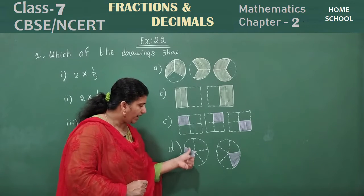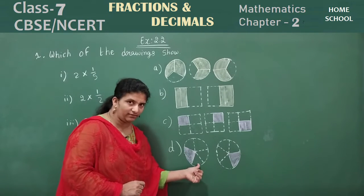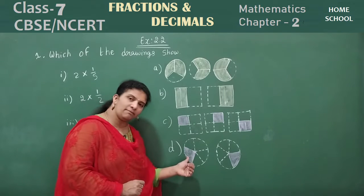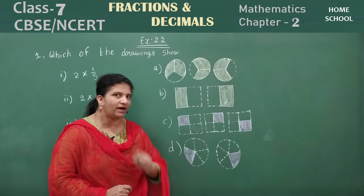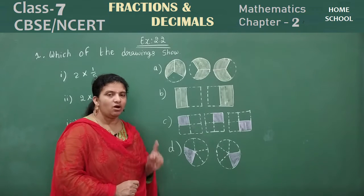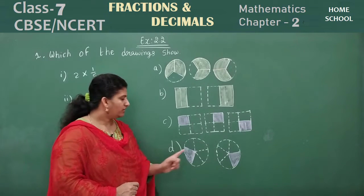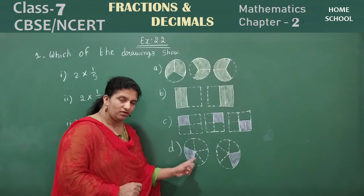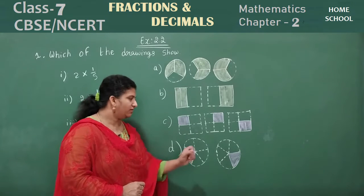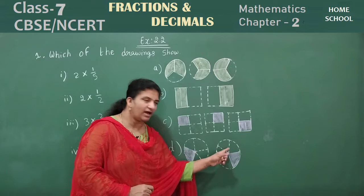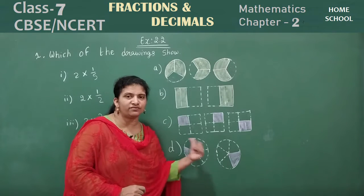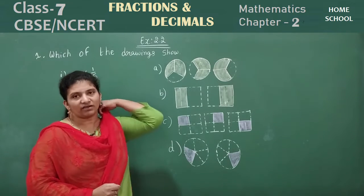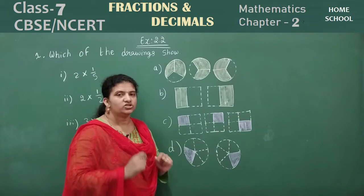Now observe this circle. How many parts does it have? 1, 2, 3, 4, 5 — the whole is 5. Write 5 at the denominator. How many parts are shaded? Only 1, so that is 1 by 5. Similarly 1 by 5 again. How many such figures are there? 2, so 2 into 1 by 5 is your fraction.